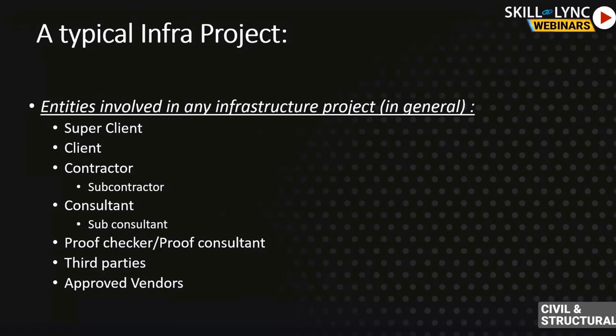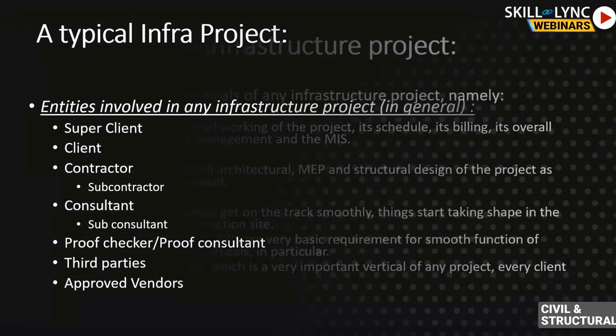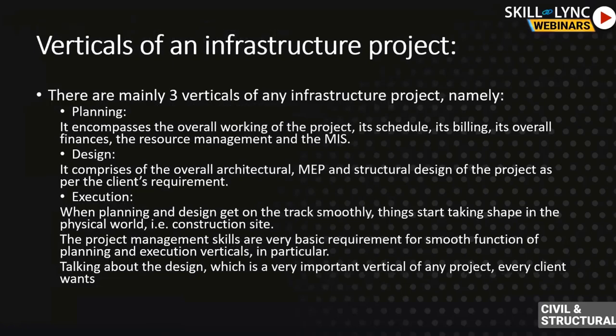The main materials concerned in civil engineering are steel and concrete. Steel can be HYSD bars — high-yield strength deformed bars — and it can also be the tendons of a pre-stressed system. The verticals of an infrastructure project are planning, design, and execution.